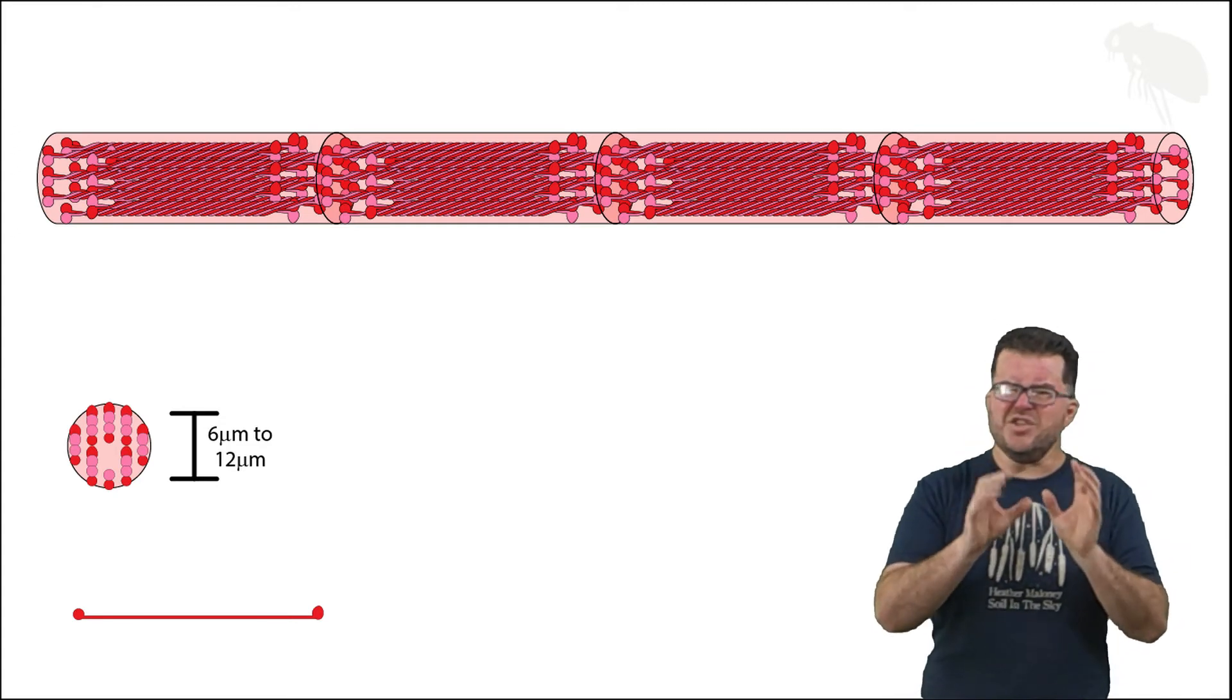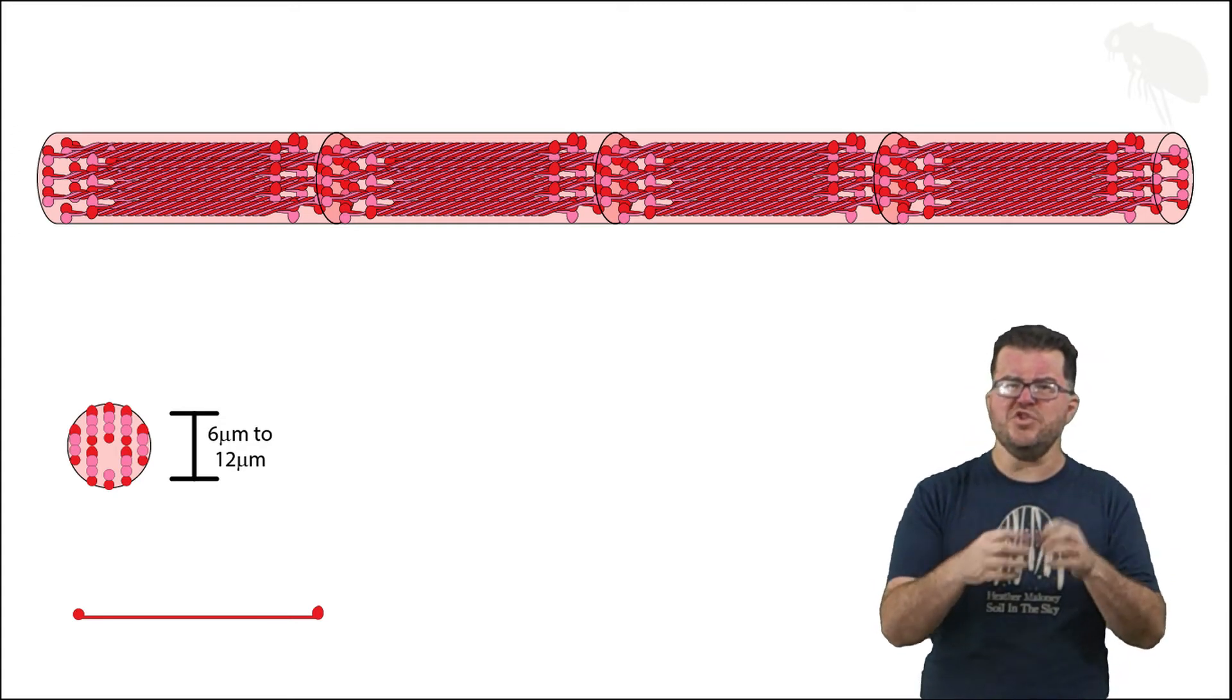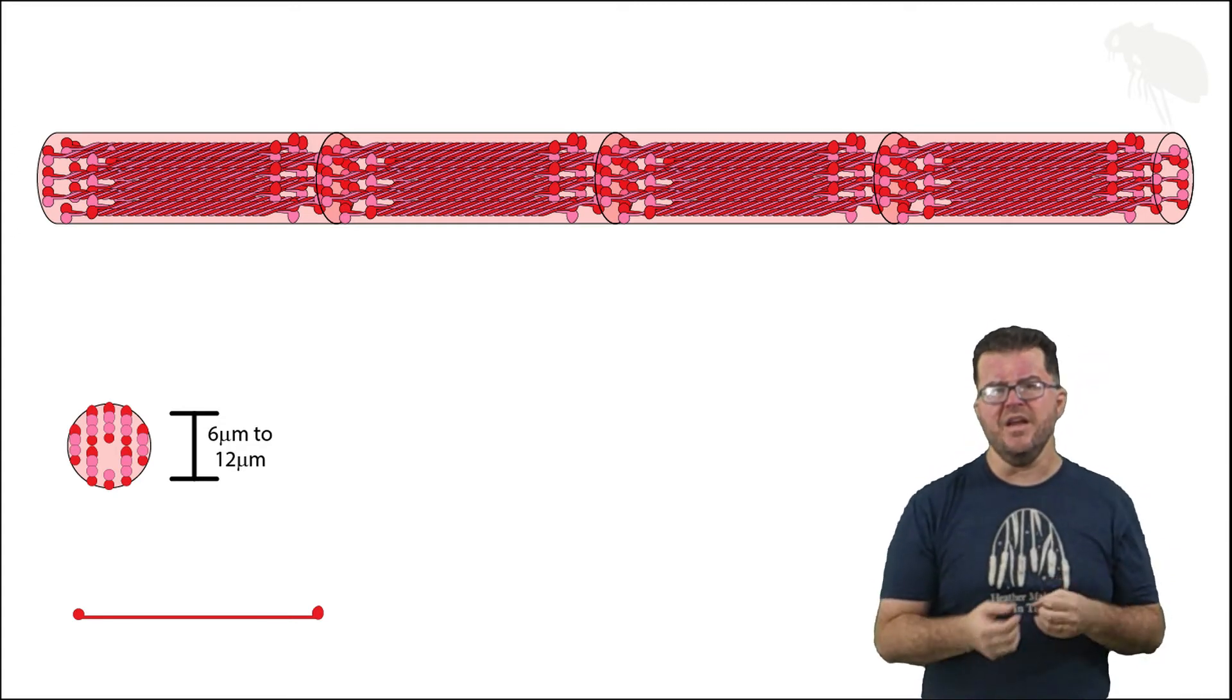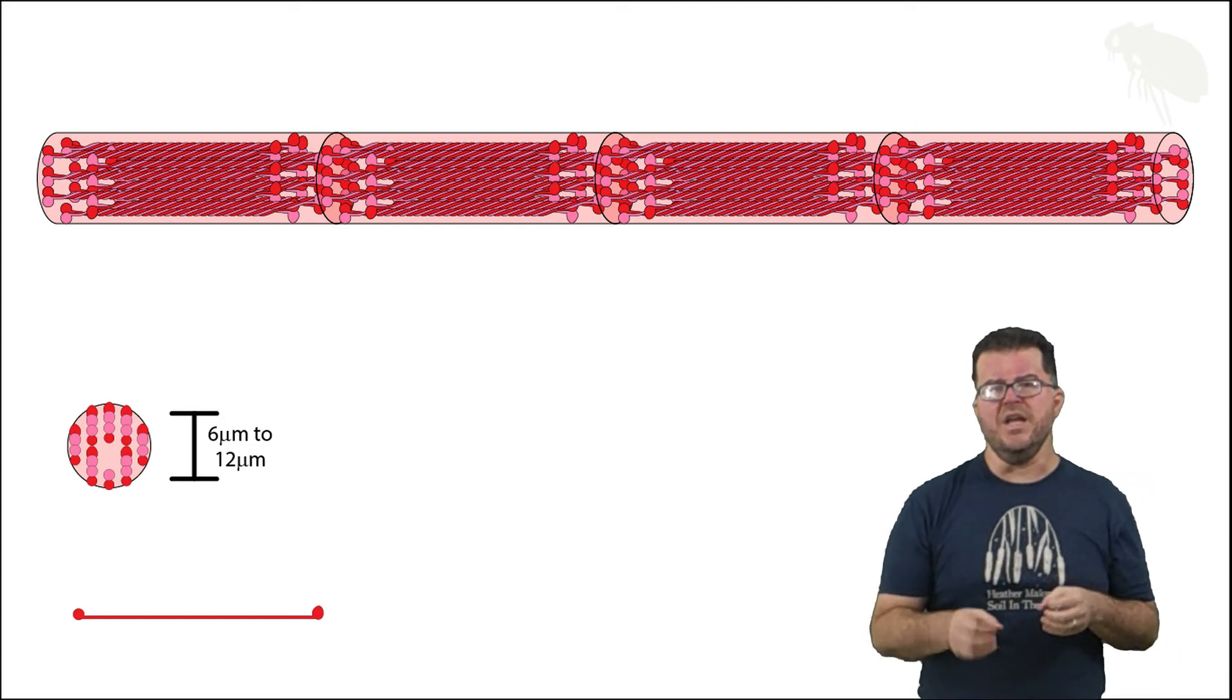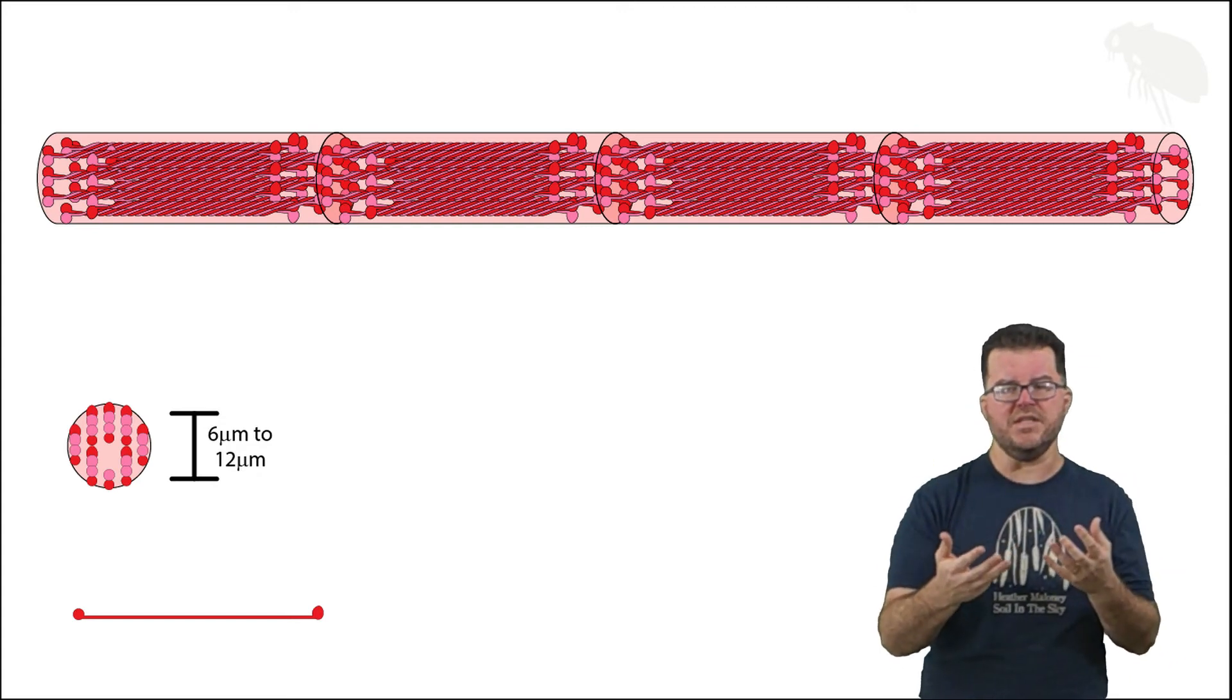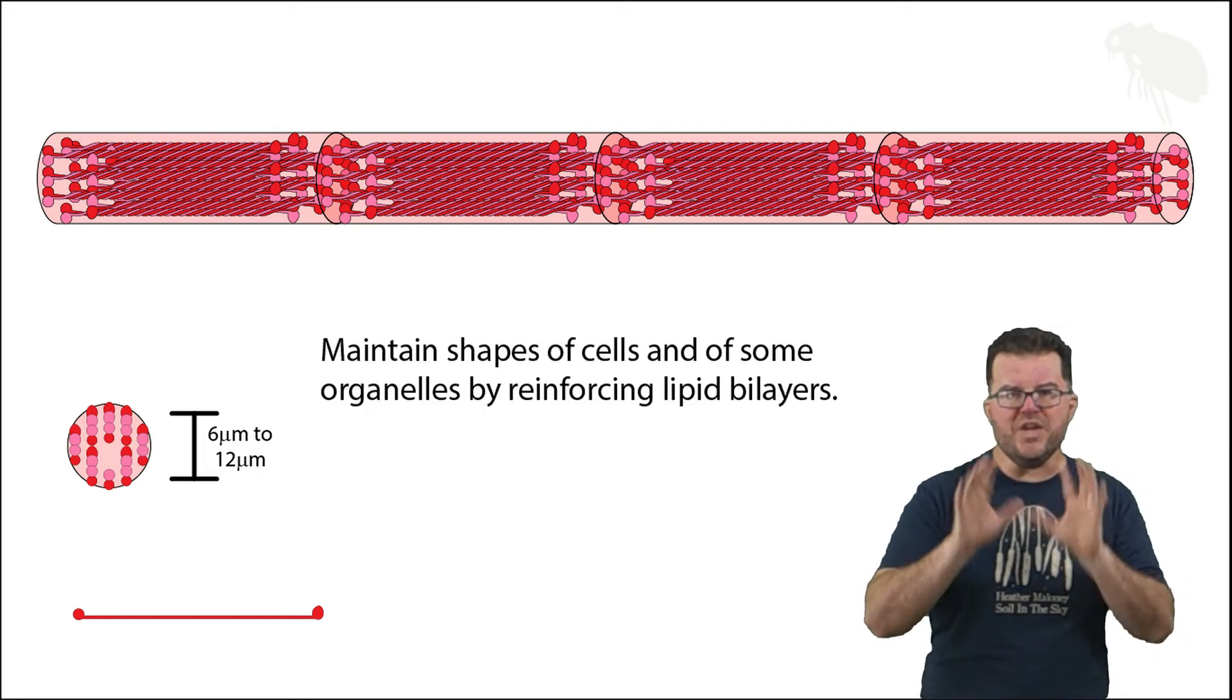But I always like to zero this in on really just the two to three at most functions that really get encountered frequently at the introductory level in biology. And so in the case of intermediate filaments, number one: they reinforce the phospholipid bilayer of cells.